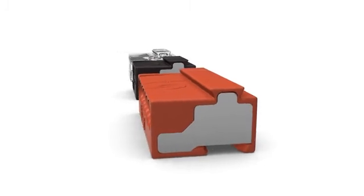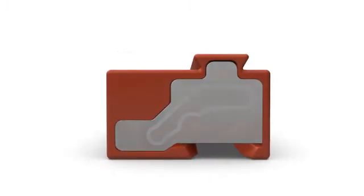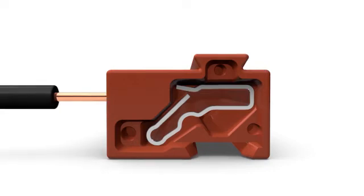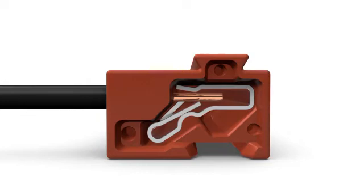The junction box connectors feature Wago's Push Wire Connection Technology, allowing stripped conductors to be simply pushed into the clamping unit until they hit backstop. This is the fastest way to reliably terminate solid conductors.